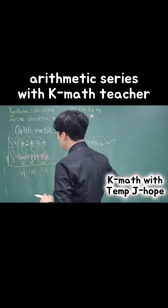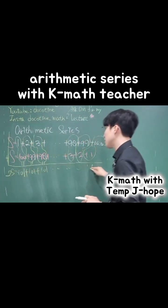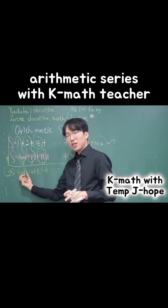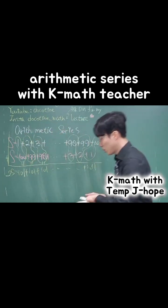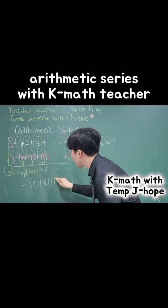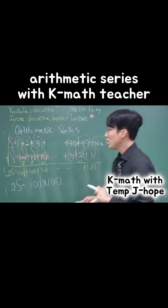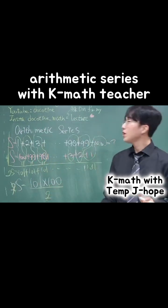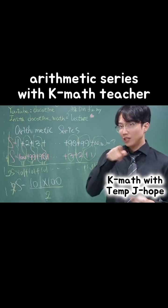So if we add the top series and the bottom series together, we get 2S. We have 101 appearing 100 times, so this becomes 101 multiplied by 100, which equals 2S. All we need to do is divide by 2. If we understand this, we can build a formula.